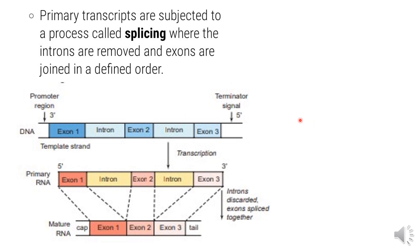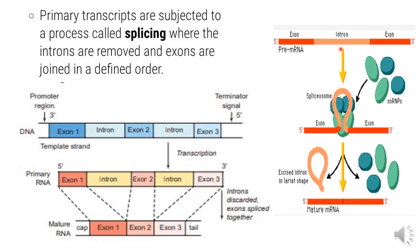Splicing is very important. In splicing, introns are removed from pre-mRNA using a multi-protein complex called the spliceosome, which is spherical in shape. The spliceosome contains small nuclear RNAs (snRNAs) and small nuclear ribonuclear proteins (snRNPs). These components act as the enzyme machinery to remove introns.